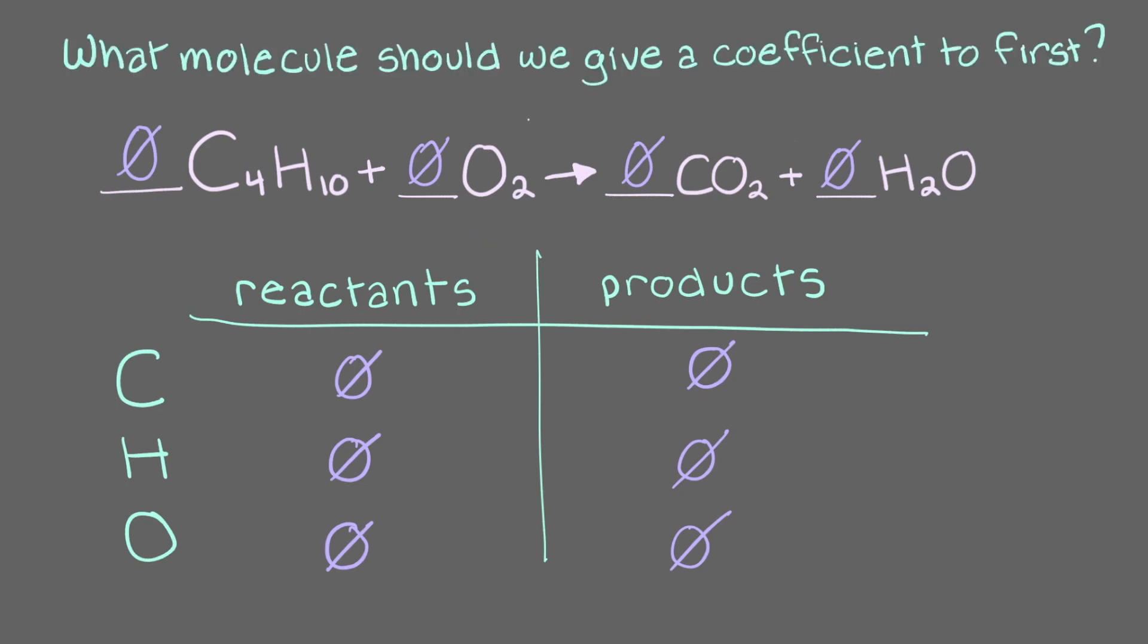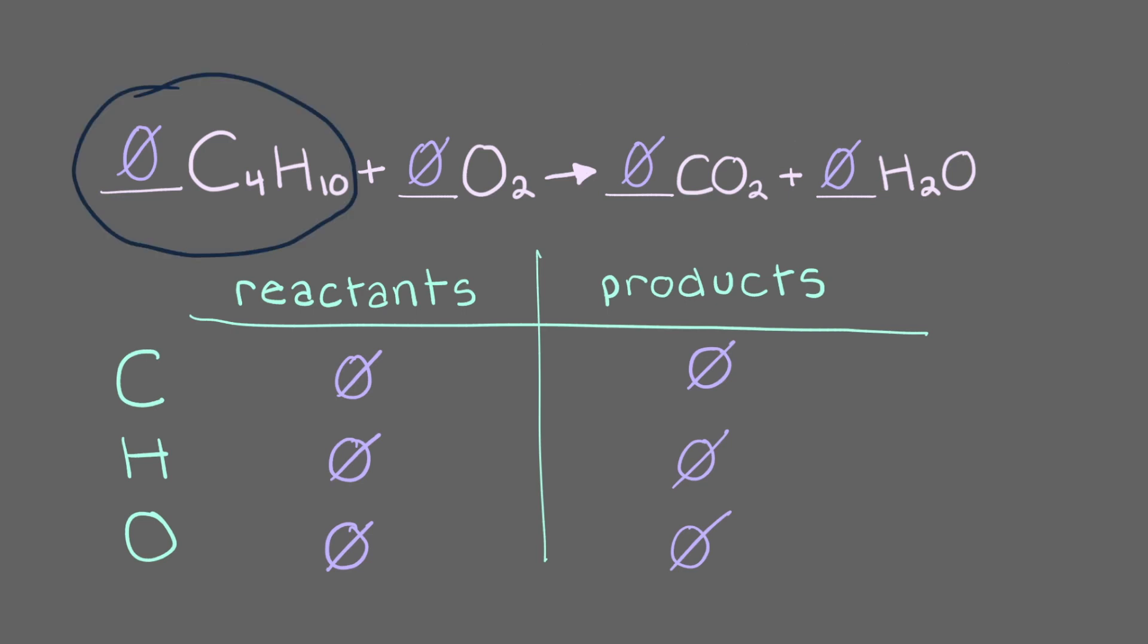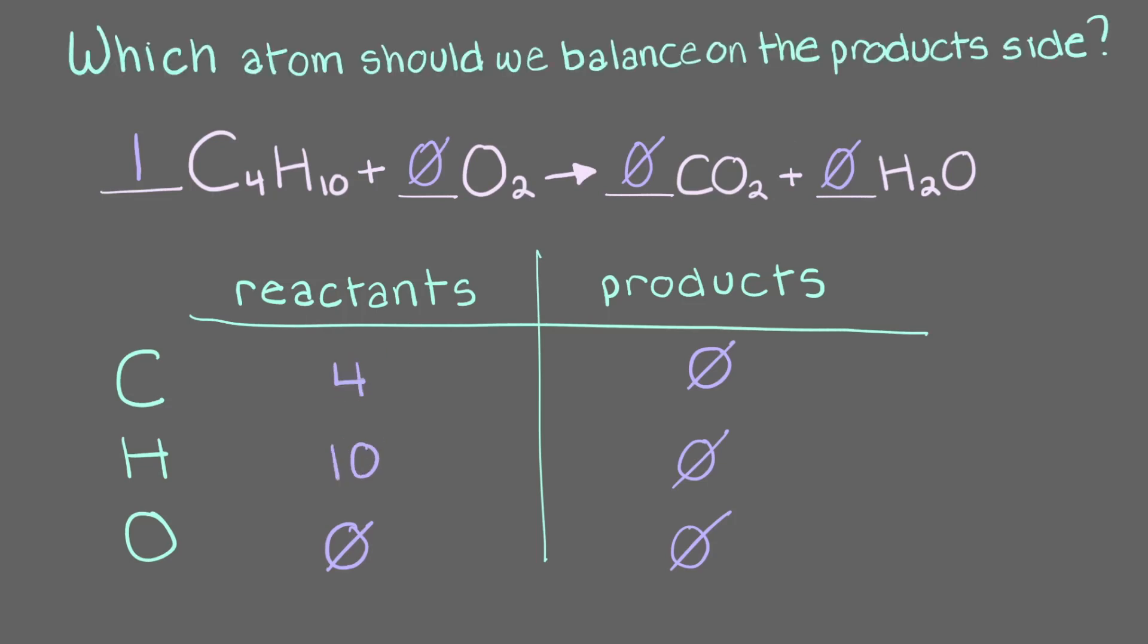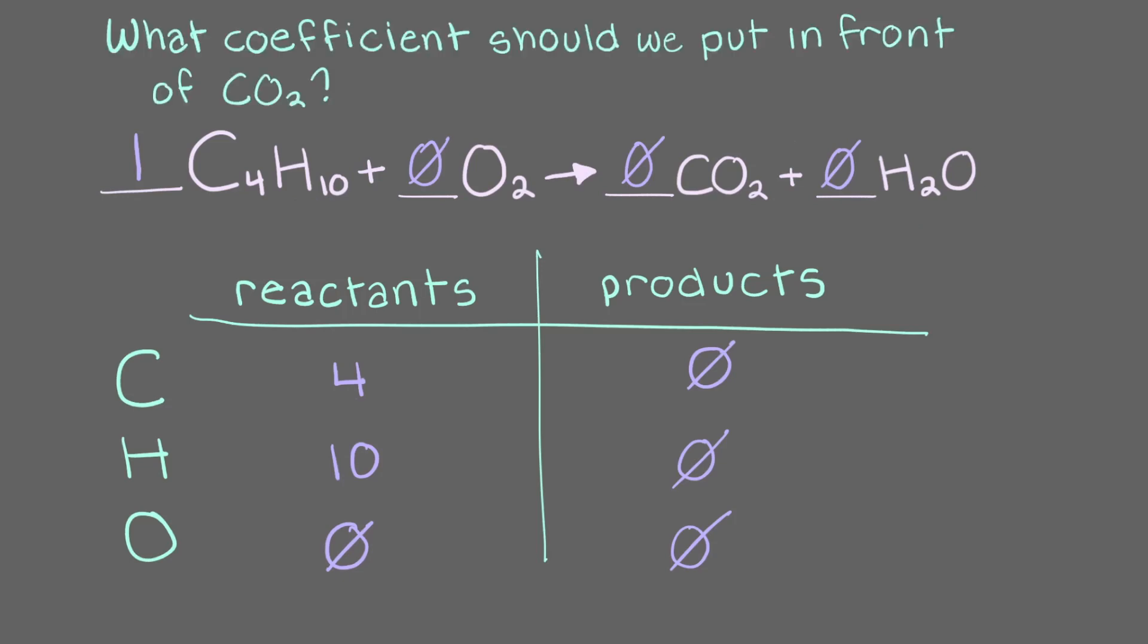What molecule should we give a coefficient to first? Since C4H10 is the largest and most complex molecule in this equation, we give it a coefficient of 1. Make sure to record the atoms in the table. Now that we have a molecule on the reactant side, which atoms should we balance on the product side? We can balance either carbon or hydrogen on the product side. Let's start off with carbon. What coefficient should we put in front of CO2? That's right, putting a 4 in front of CO2 adds 4 carbons and 8 oxygens to the right-hand side of the equation.